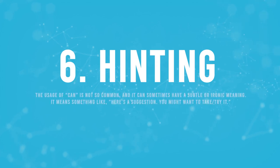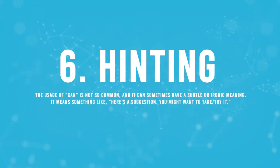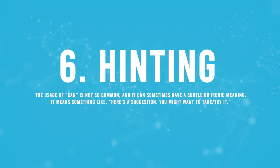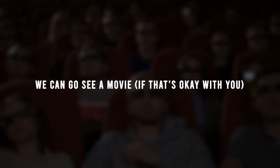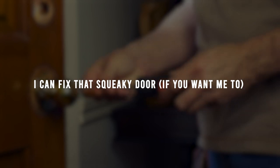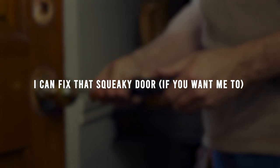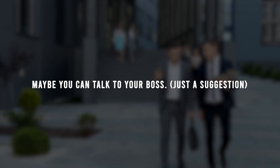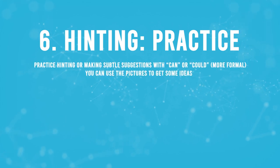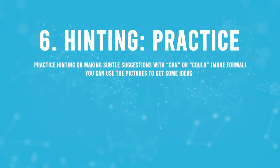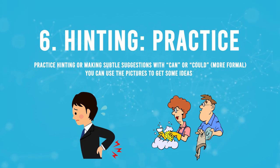Six: hinting. This usage of can is not so common and it can sometimes have a subtle or ironic meaning. It means something like, 'Here's a suggestion — you might want to take it or try it.' For example: We can go see a movie, if that's okay with you. I can fix that squeaky door, if you want me to. Maybe you can talk to your boss — just a suggestion. Practice hinting or making subtle suggestions with can or could — more formal. You can use the pictures to get some ideas. Pause the video if you'd like more time.